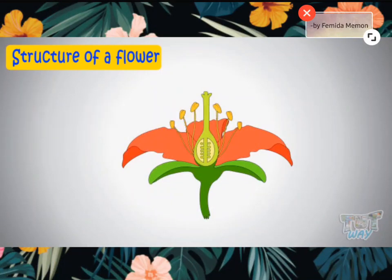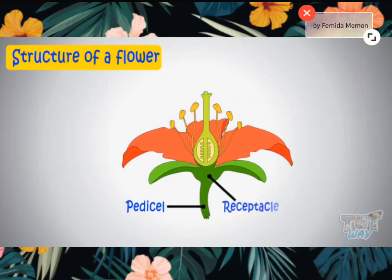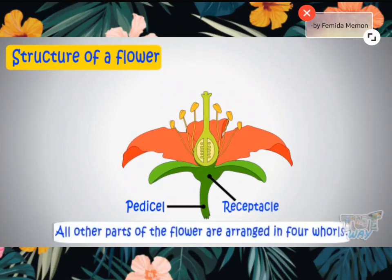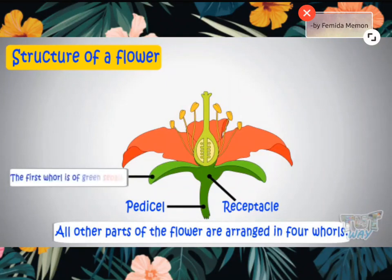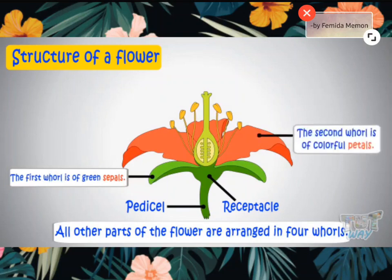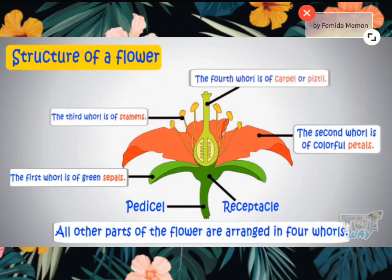Next is the flower, which is the reproductive organ of the plant. Structure of a flower: there is the pedicel, which is a green color stalk. Then there is the receptacle. All the other parts of the flower are arranged in four whorls. The first whorl is of green sepals. The second is colorful petals. The third is the stamen, which is the male reproductive part. The fourth is the carpel or pistil, which is the female reproductive part of the flower.